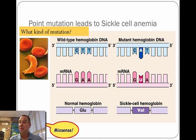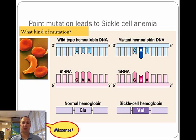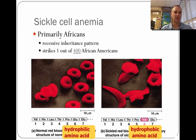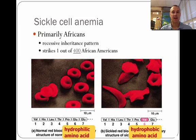Point mutations can be very bad. For example, sickle cell anemia is caused by a point mutation in the hemoglobin. Simply by changing a T to an A, it changes the entire makeup of the hemoglobin. This missense mutation can be dangerous — one in every 400 African Americans has sickle cell anemia, so it's pretty common. It's just caused by that one nitrogen base being changed, causing the missense.